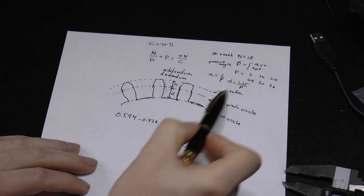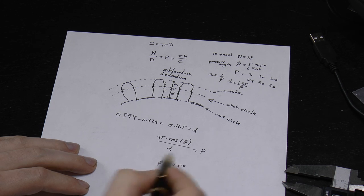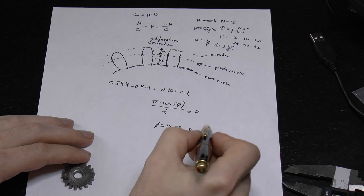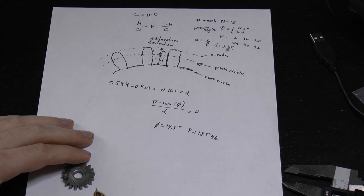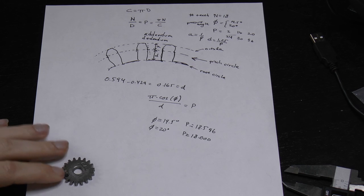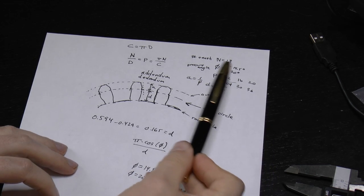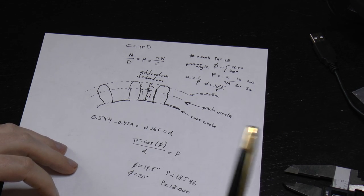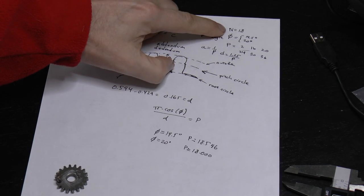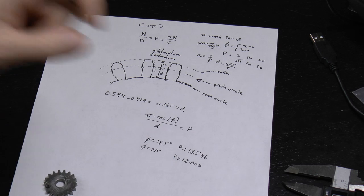If I take pi times cosine of 14.5° and divide by d, I get a pitch of 18.546, which is clearly not a standard integral number. If I use phi equals 20 degrees and calculate the diametral pitch, I get 18.000, which is really good — my measurement is pretty good and I've got an integer, which means it's standard. Oddly enough, 18 is not listed on standard manufacturing sites, but the point is that it's an integer. So now we know the number of teeth is 18, the pressure angle is 20 degrees, and the diametral pitch is 18.